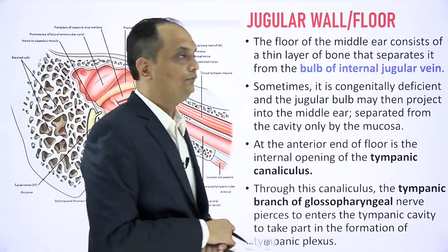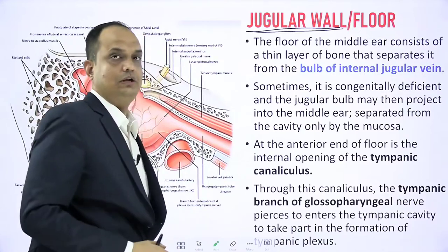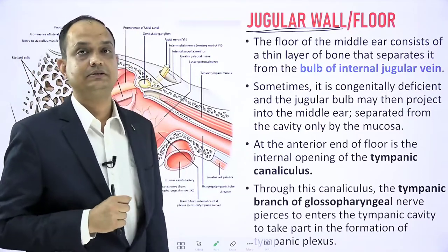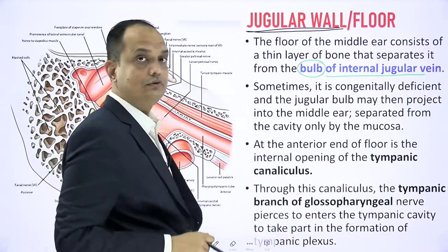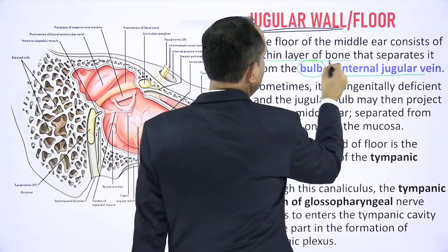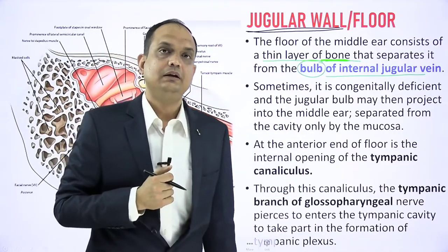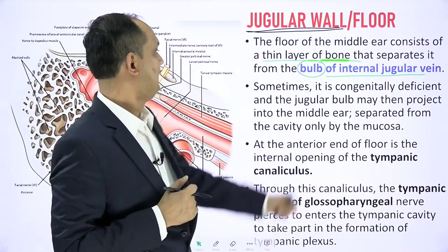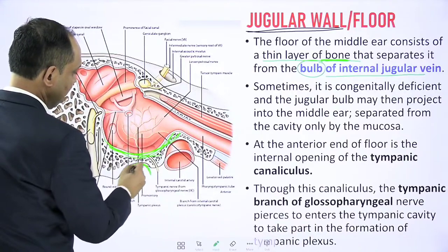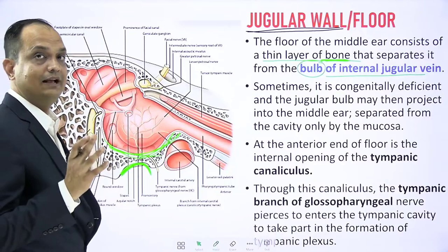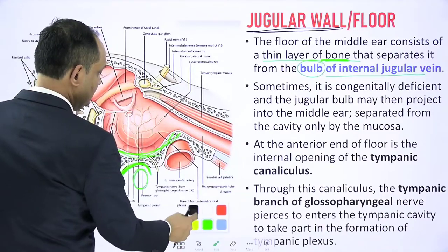The floor of the middle ear is known as the jugular wall because the internal jugular vein shows a dilatation near its beginning called the bulb of the internal jugular vein. The floor has a very thin layer of bone that separates the bulb of the internal jugular vein from the middle ear cavity, which is why it is called the jugular wall. In the diagram, the jugular fossa contains the internal jugular vein with its bulb, separated from the middle ear by this thin bony plate.